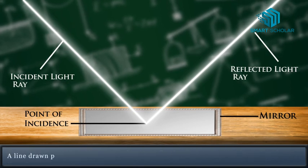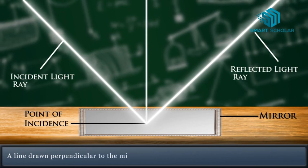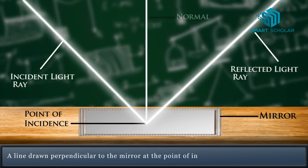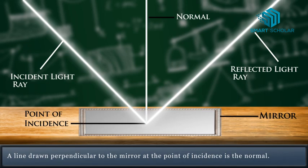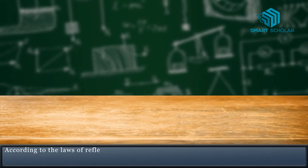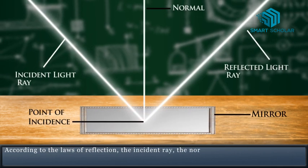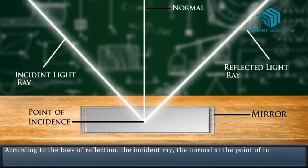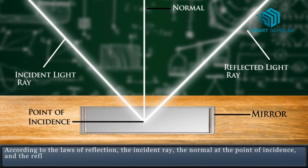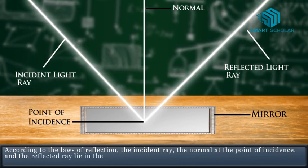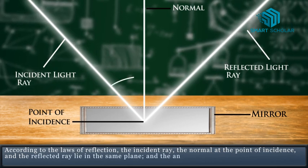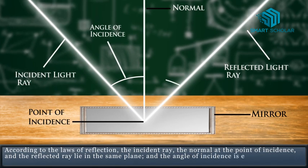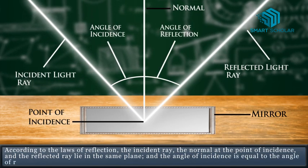A line drawn perpendicular to the mirror at the point of incidence is the normal. According to the laws of reflection, the incident ray, the normal at the point of incidence and the reflected ray lie in the same plane and the angle of incidence is equal to the angle of reflection.